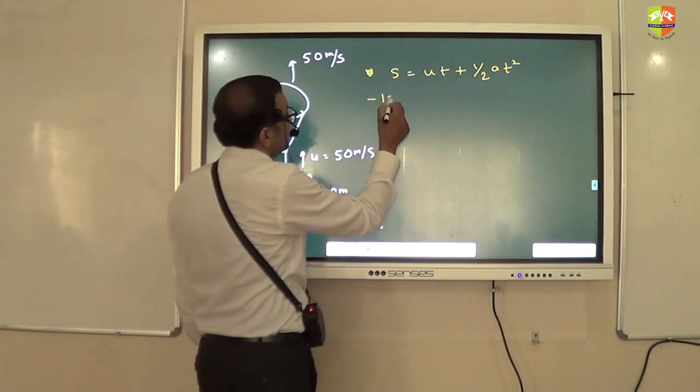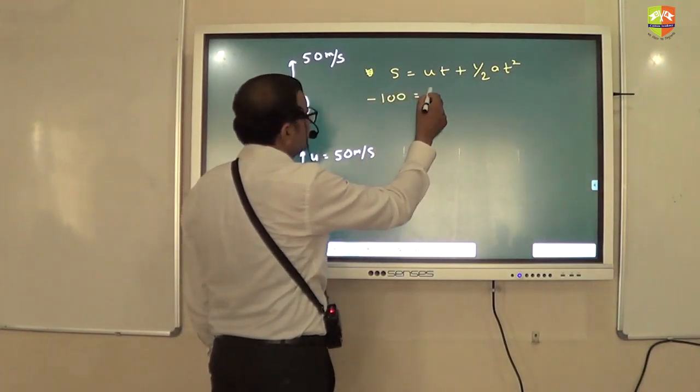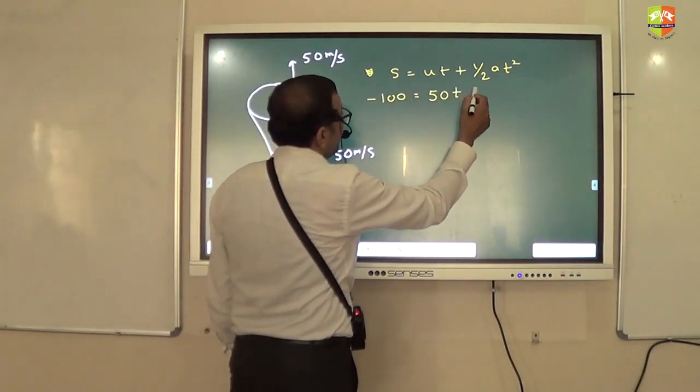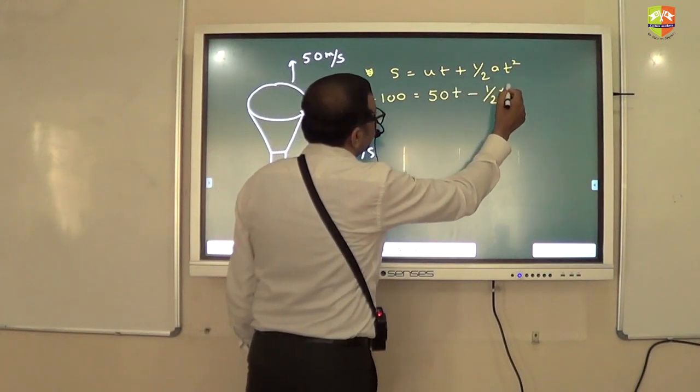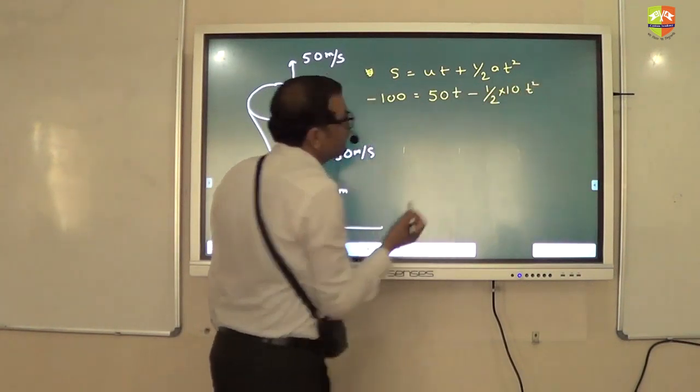S is how much? Minus 100. U is how much? Plus 50. A is how much? Minus 10. This is correct?